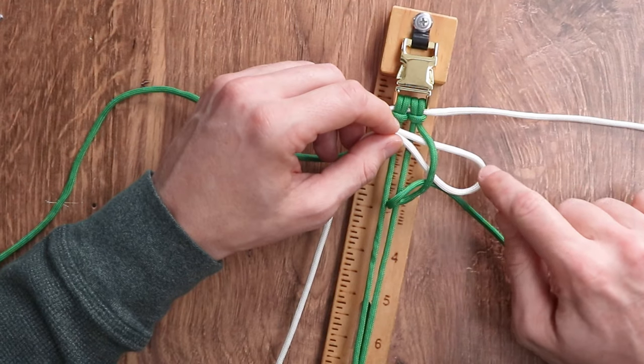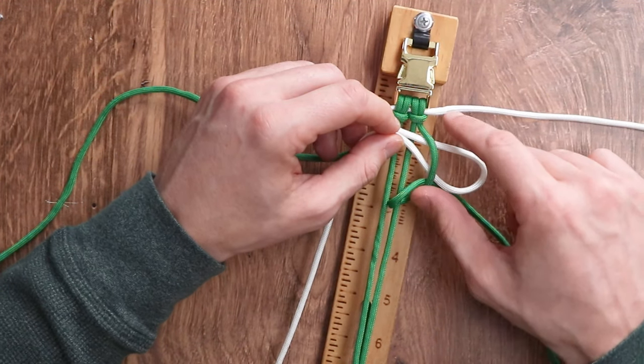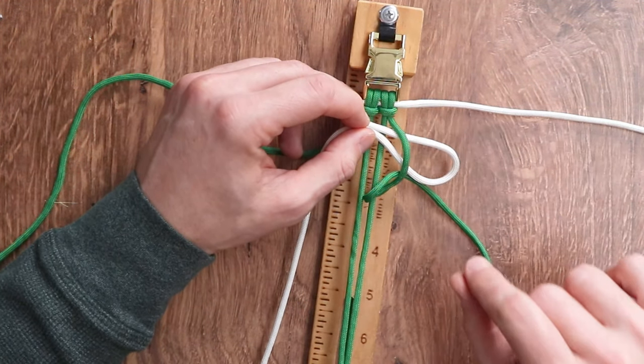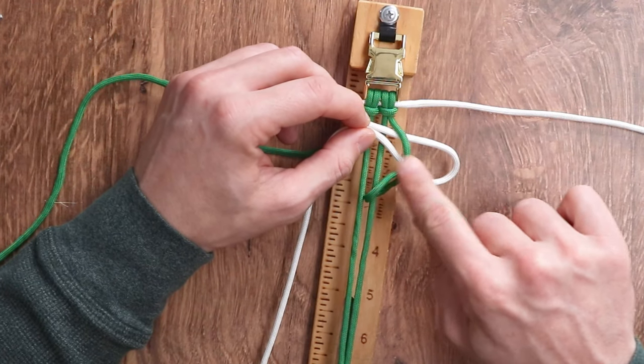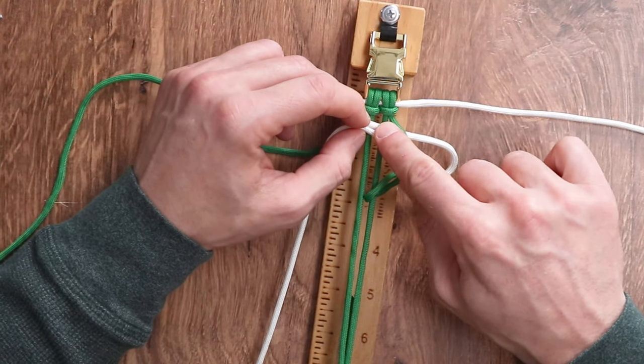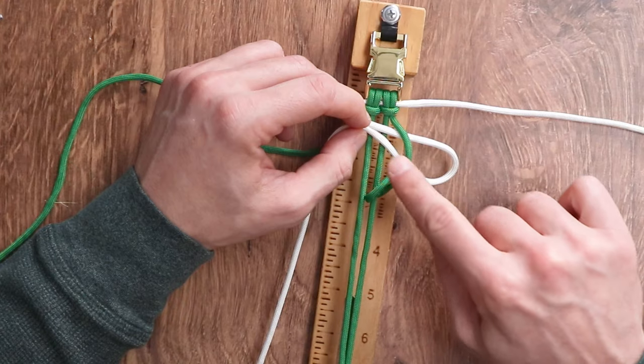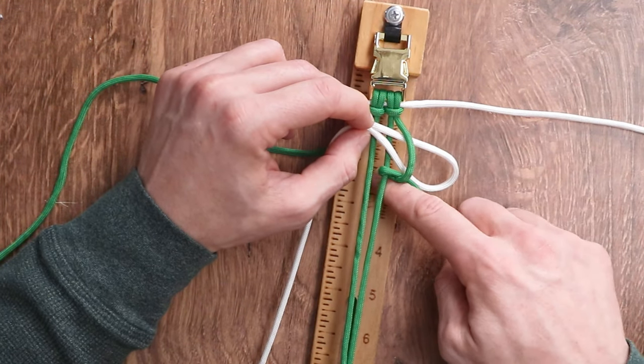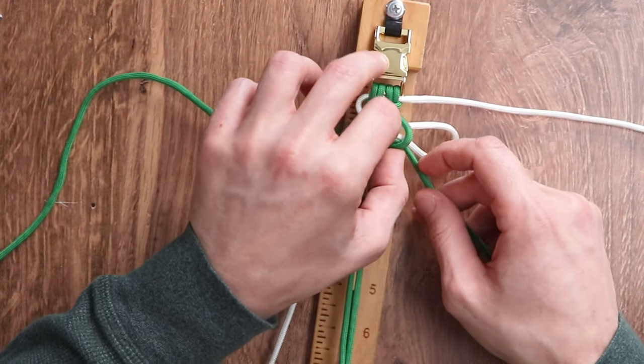Now, the only time you'll really have to worry about making sure that this loop is on the right side is for the very first pass. So we're going to hold that with our left hand, hold the white paracord with our left hand, and cinch this knot that we just made.